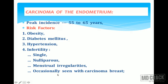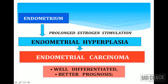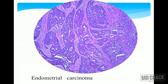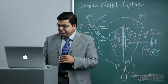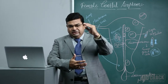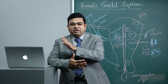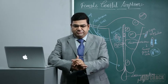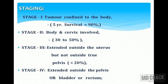Complex endometrial hyperplasia also imposes risk for endometrial carcinoma development. Prolonged estrogen stimulation leads to hyperplasia, and with nuclear atypia, endometrial carcinoma can develop. Carcinomas can be well-differentiated with better prognosis or poorly differentiated with worse prognosis. Microscopically, the endometrioid type shows abnormal glands with anaplastic features infiltrating into the myometrium. The depth of myometrial infiltration — involving one-third, two-thirds, or the entire myometrium — determines staging.